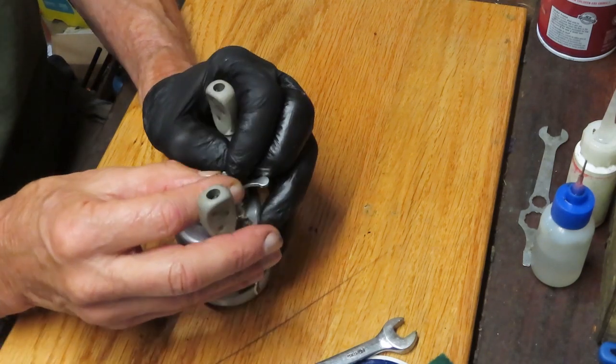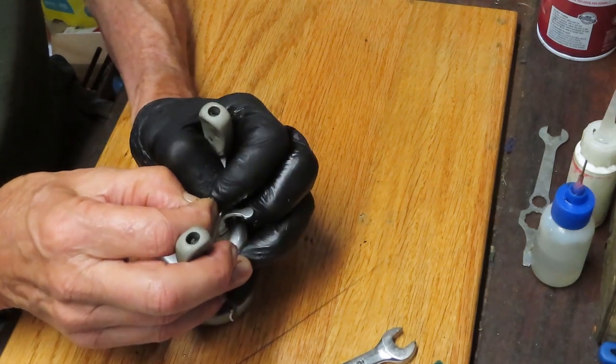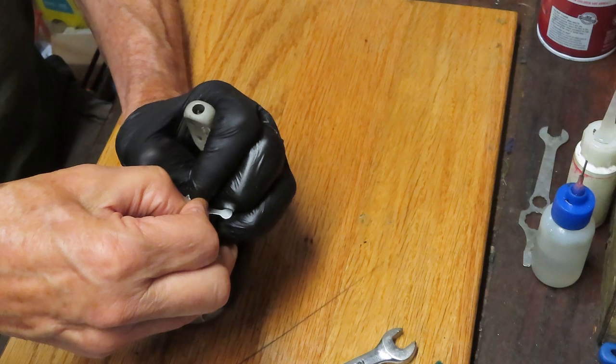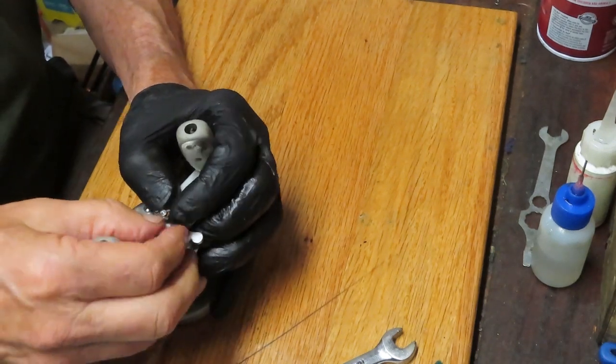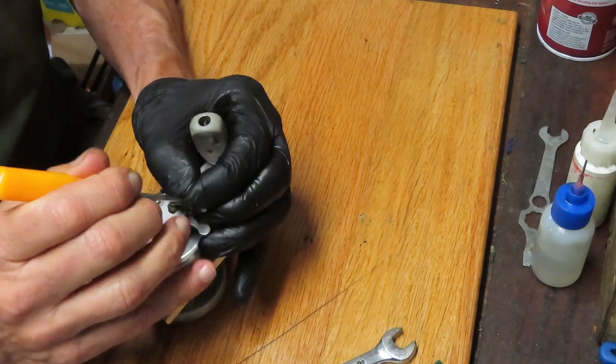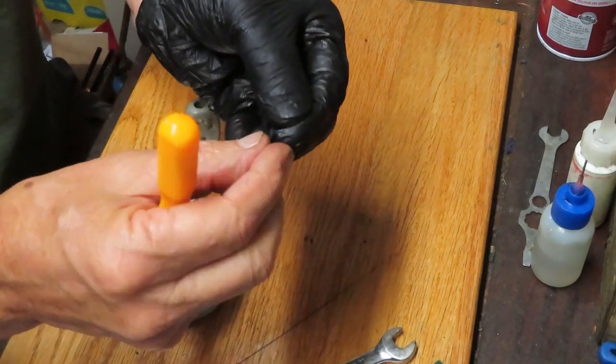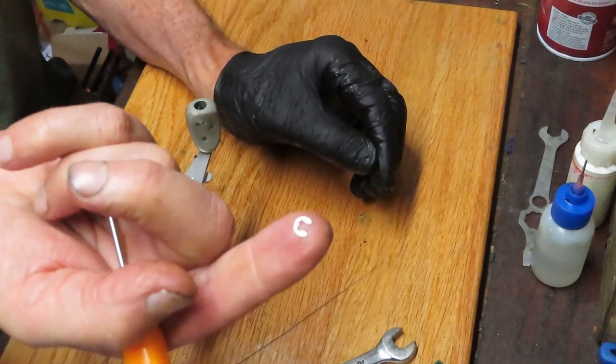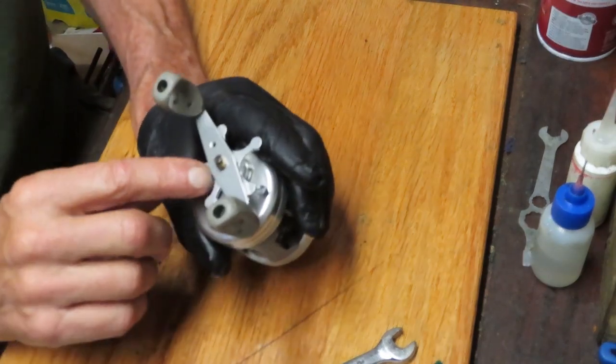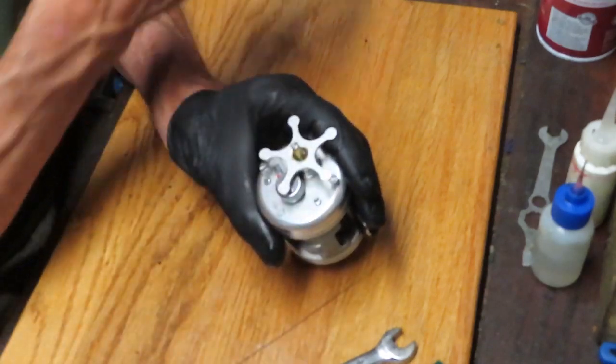We've removed the handle nut. Now there's an E-clip here that holds the gear post to the bridge. This is a C-clip or an E-clip. Most of the time you can work that out with your finger. Just be careful, it can shoot very quickly and you can lose that and then you're going to go on quite a search to find out where it landed. With the clip removed, you can take the handle off.